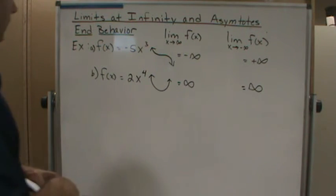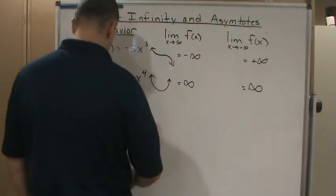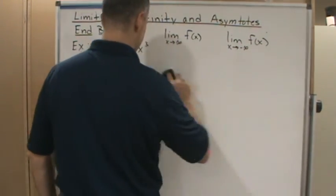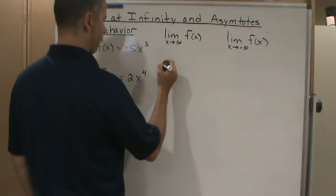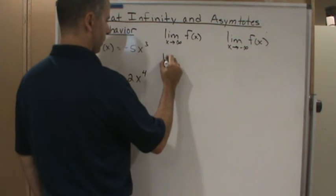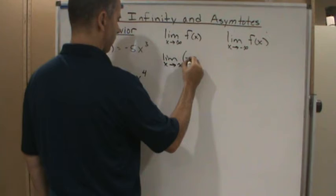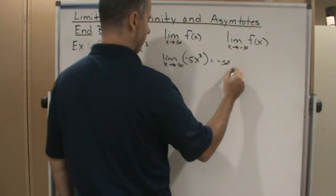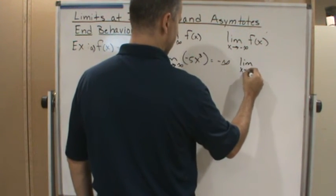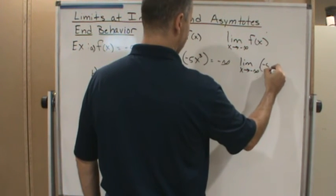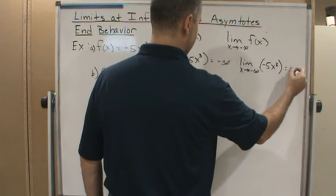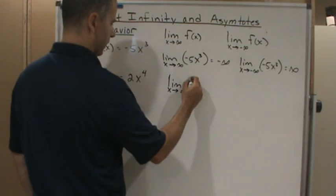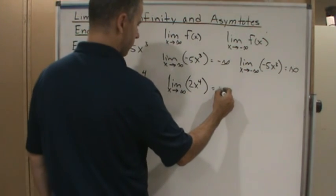Technically, if I was doing this on a homework assignment, I would just write it out. In this case here, I would say the limit as x approaches infinity of -5x³ is going to be negative infinity. The limit as x approaches negative infinity of -5x³ is positive infinity. And then here for the second one, the limit as x approaches infinity of 2x⁴ equals positive infinity.